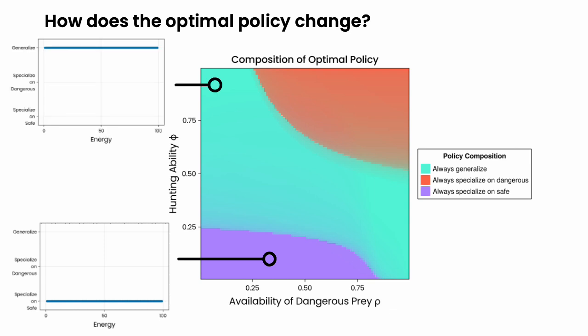And in the top left corner of this plot, when the hunting ability is high but the availability of dangerous prey is low, it is best to always generalize regardless of your energy level.